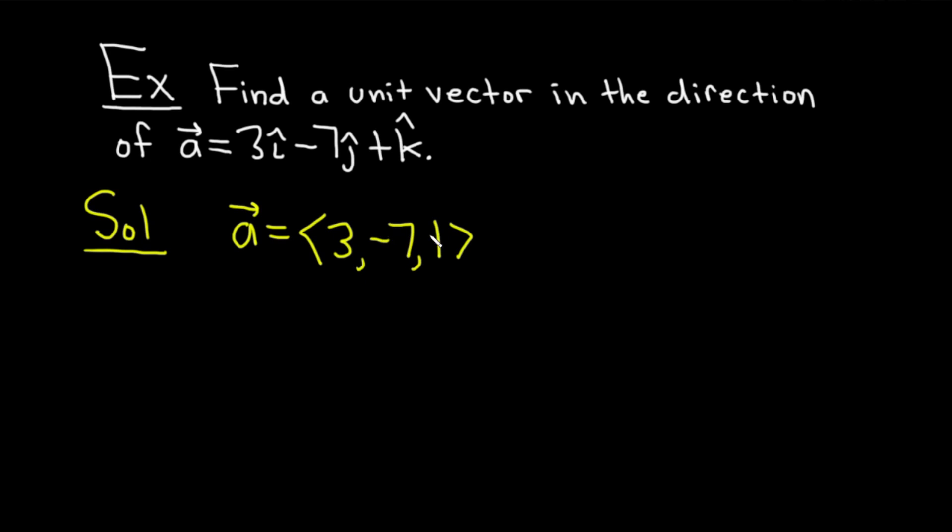This is called the component form of the vector. And by the way, this is a vector in three-dimensional space, right, because we have three components. All right, so to find a unit vector in the direction of a vector, basically all you do is you take your vector and divide by its magnitude.